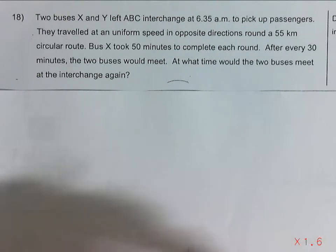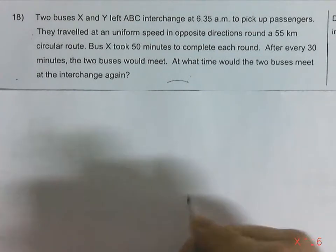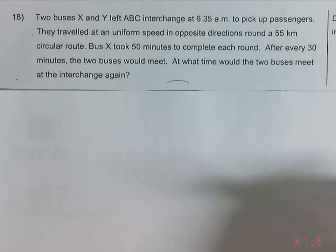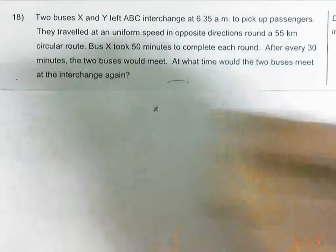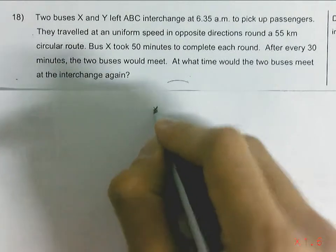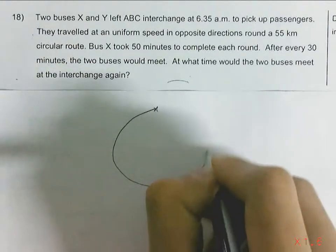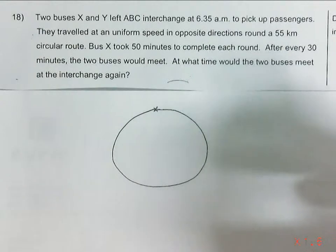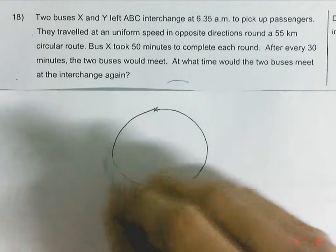Two buses travel in opposite directions from ABC interchange. So they started off at the same point and they say the circular route is 55km. So one round would be 55km.